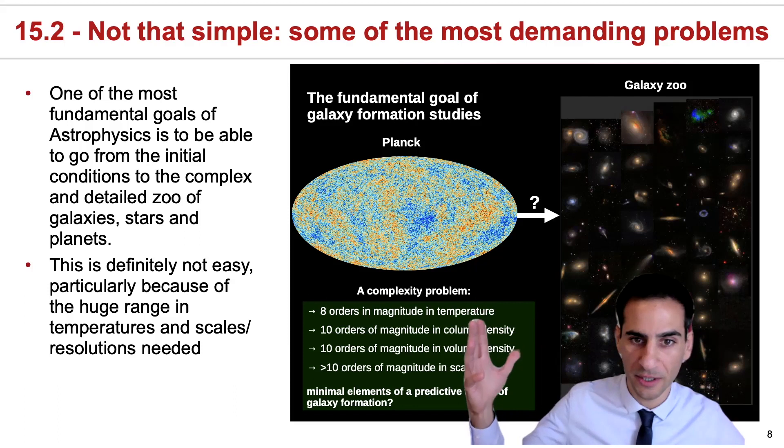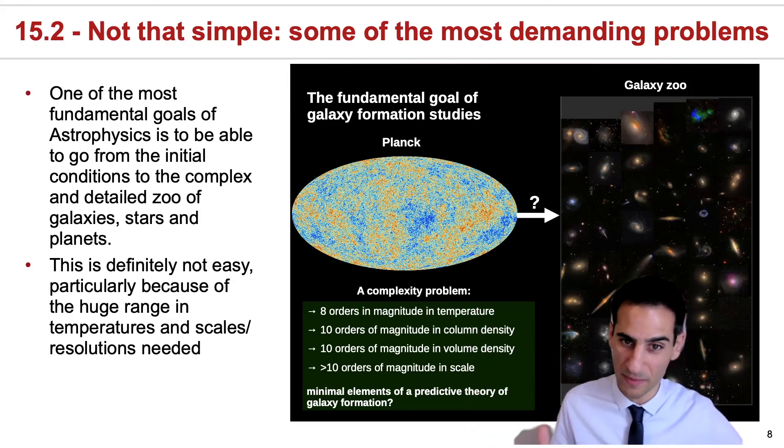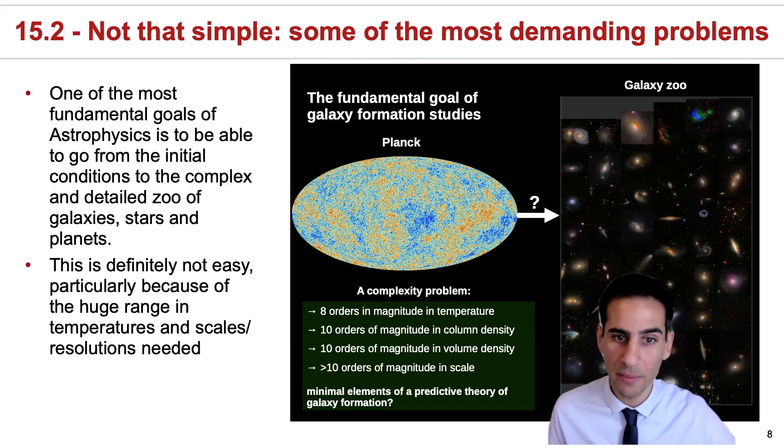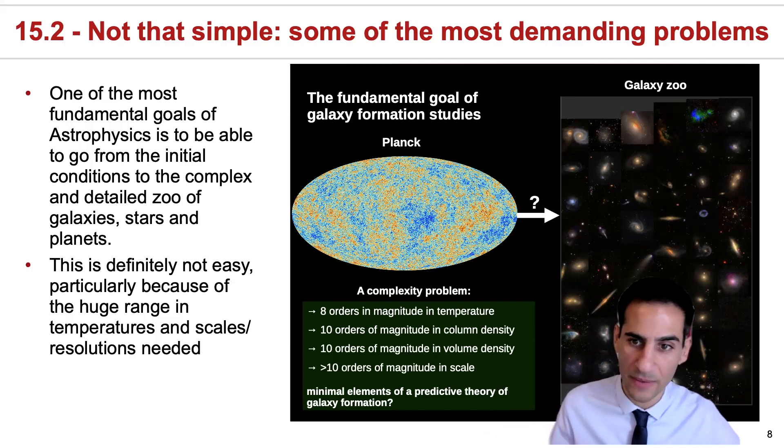The main problems are actually summarized here. They include the necessity to actually simulate over eight orders of magnitude in temperature, ten orders of magnitude in column density in terms of how dense the gas or matter can be, but also more than ten orders of magnitude in scale.